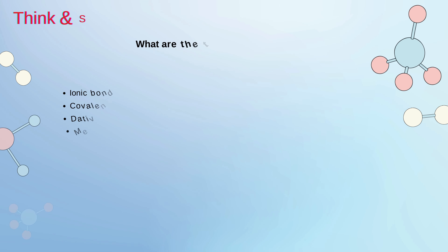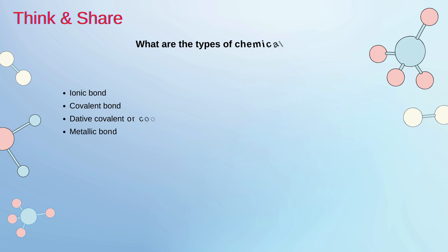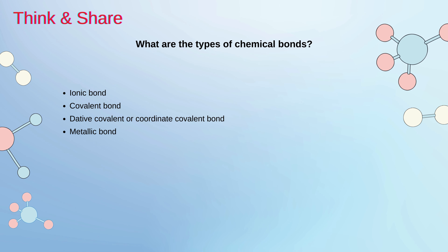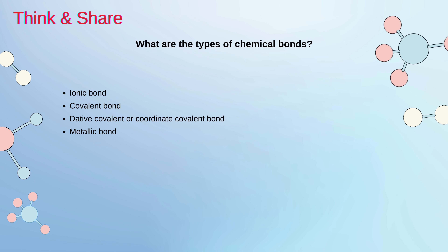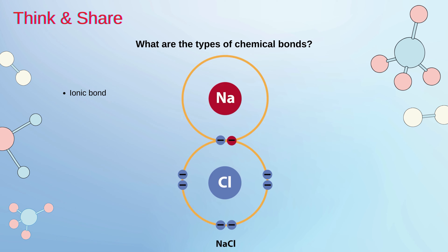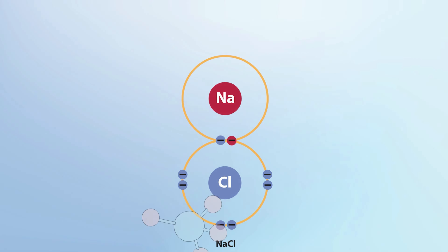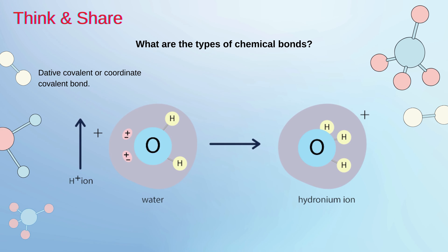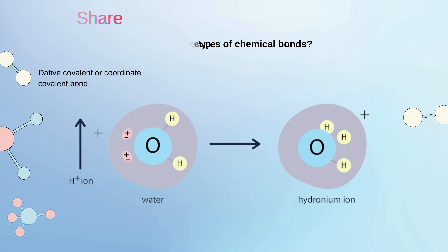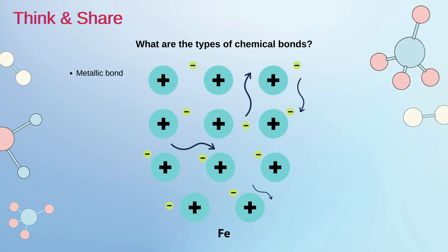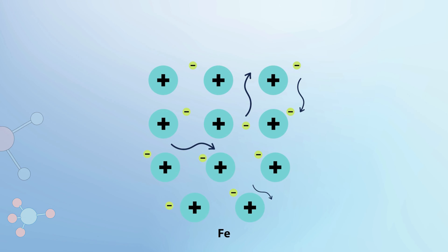What are the types of chemical bonds? As we all know, chemical bonds ki čaar iqsaam hai: ionic bond, covalent bond, dative covalent or coordinate covalent bond, and metallic bond.